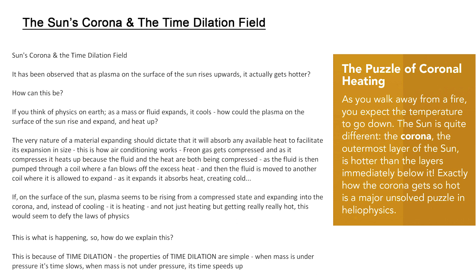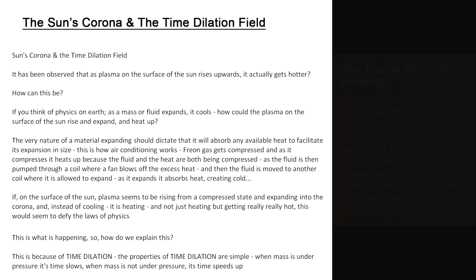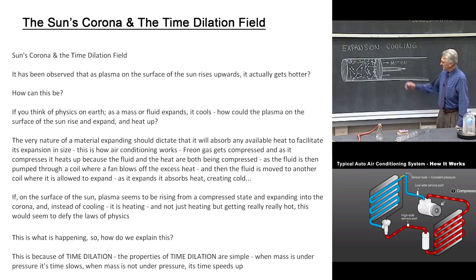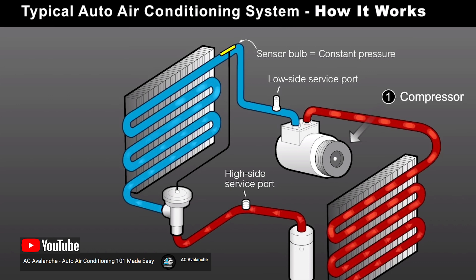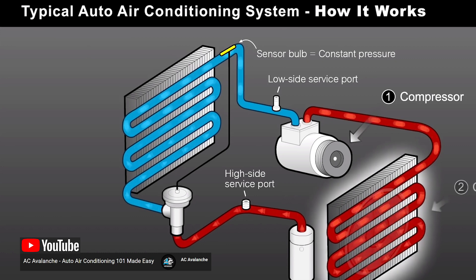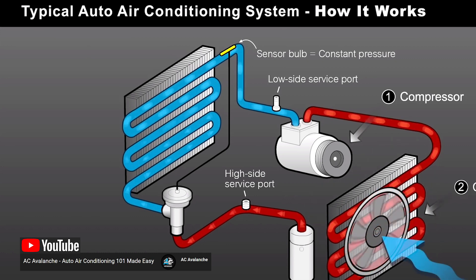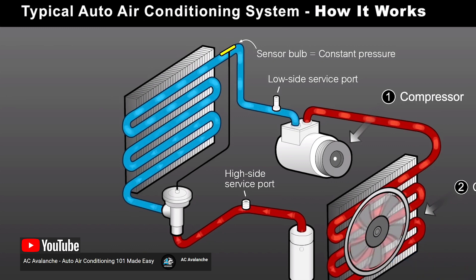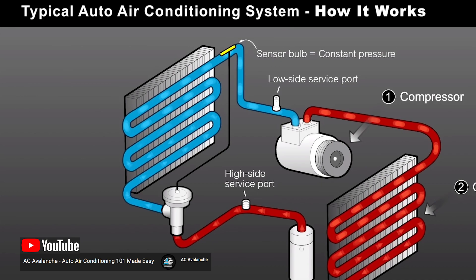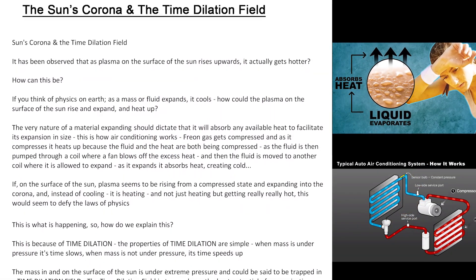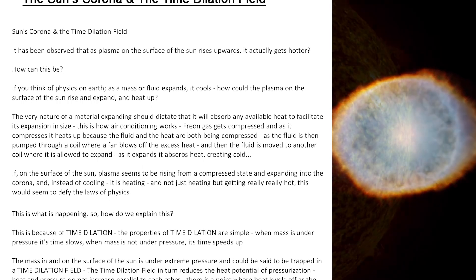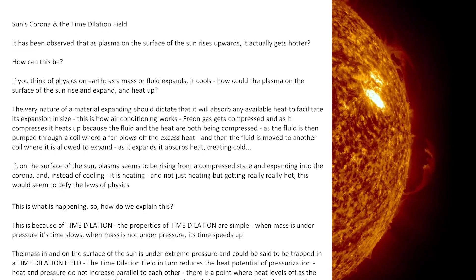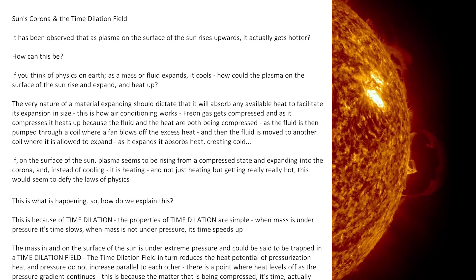The very nature of material expanding should dictate that it will absorb any available heat to facilitate its expansion in size. This is how air conditioning works. Freon gas gets compressed and as it compresses, it heats up because the fluid and the heat are both being compressed. As the fluid is then pumped through a coil where a fan blows off the excess heat, and then the fluid moves to another coil where it is allowed to expand. As it expands, it absorbs heat, creating cold. If on the surface of the sun, plasma seems to be rising from a compressed state and expanding into the corona, and instead of cooling, it is heating — and not just heating, but getting really, really hot — this would seem to defy the laws of physics.